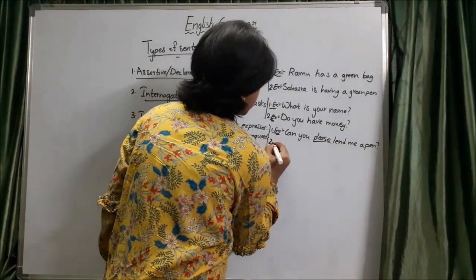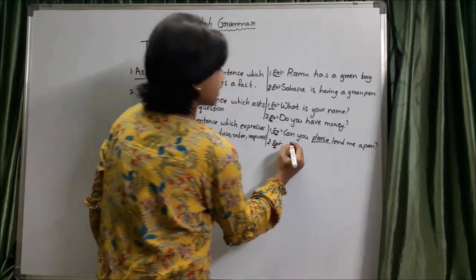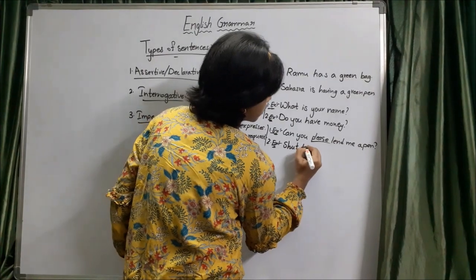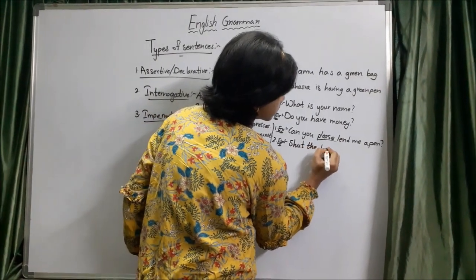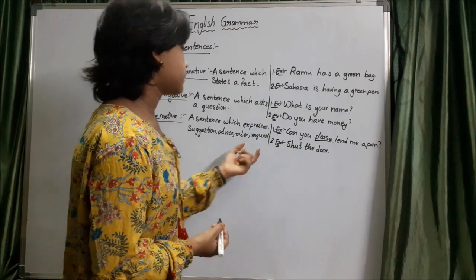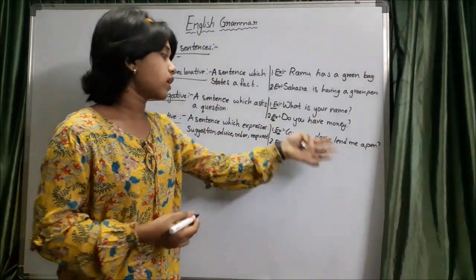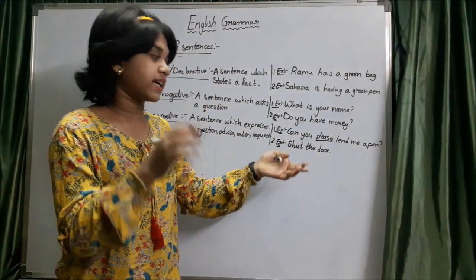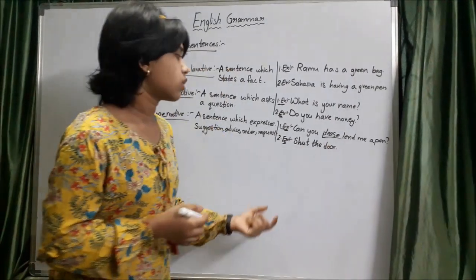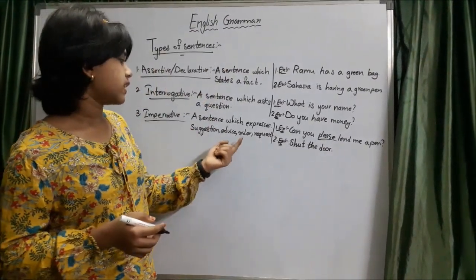Let us write an example for ordering. The example is: Shut the door. In this sentence, the person is saying to the other person — he is ordering, he is not requesting. He is ordering: shut the door. So order also comes under imperative sentence.